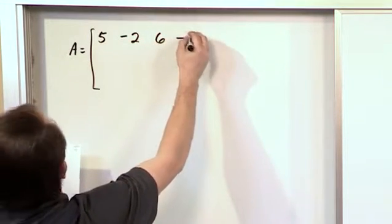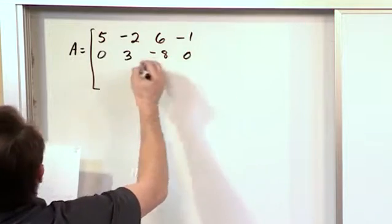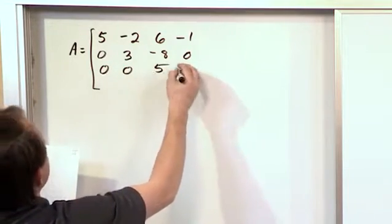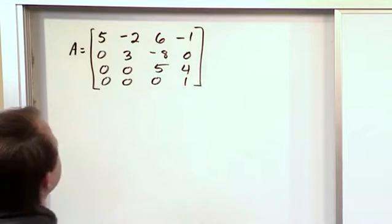The matrix A is: [5, -2, 6, -1; 0, 3, -8, 0; 0, 0, 5, 4; 0, 0, 0, 1]. We want to find the eigenvalues of that matrix.